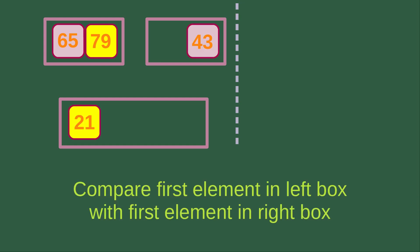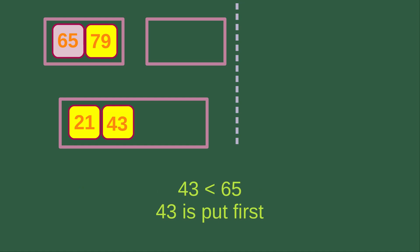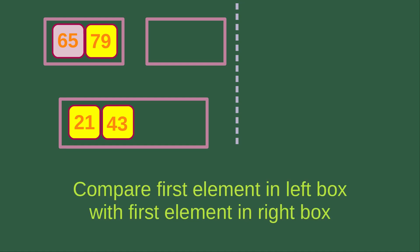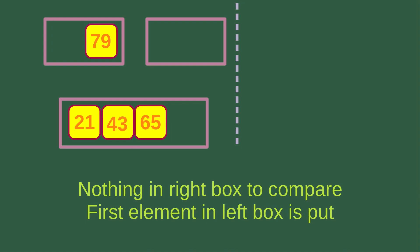Then we repeat the comparison. The first element in the left box is 65, and the first element in the right box is 43. We see that 43 is smaller than 65, so we put 43 into the merging box. Then we compare again: the first element in the left box is 65, and the right box has nothing, so we put 65 into the merging box.